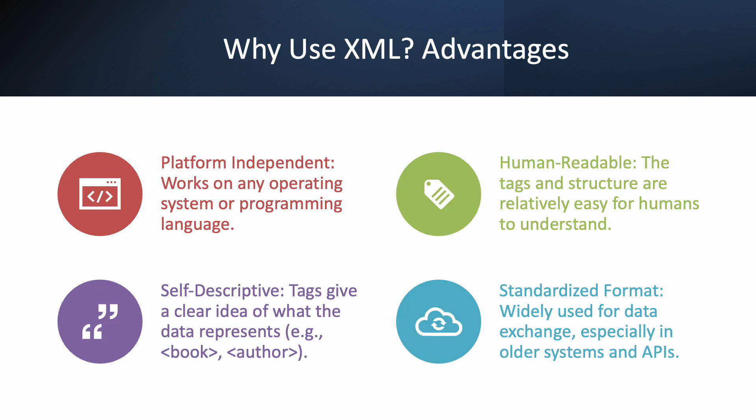So, why do we even bother with XML? Well, it has some great advantages. First, it's platform independent. A file created on a Windows machine can be easily read on a Mac, a Linux machine, or any other system. This makes it super flexible for sharing data. Second, it's human readable. If you open an XML file, you can often get a good sense of what's going on just by looking at the tags. For example, a tag like book or author is pretty self-explanatory.